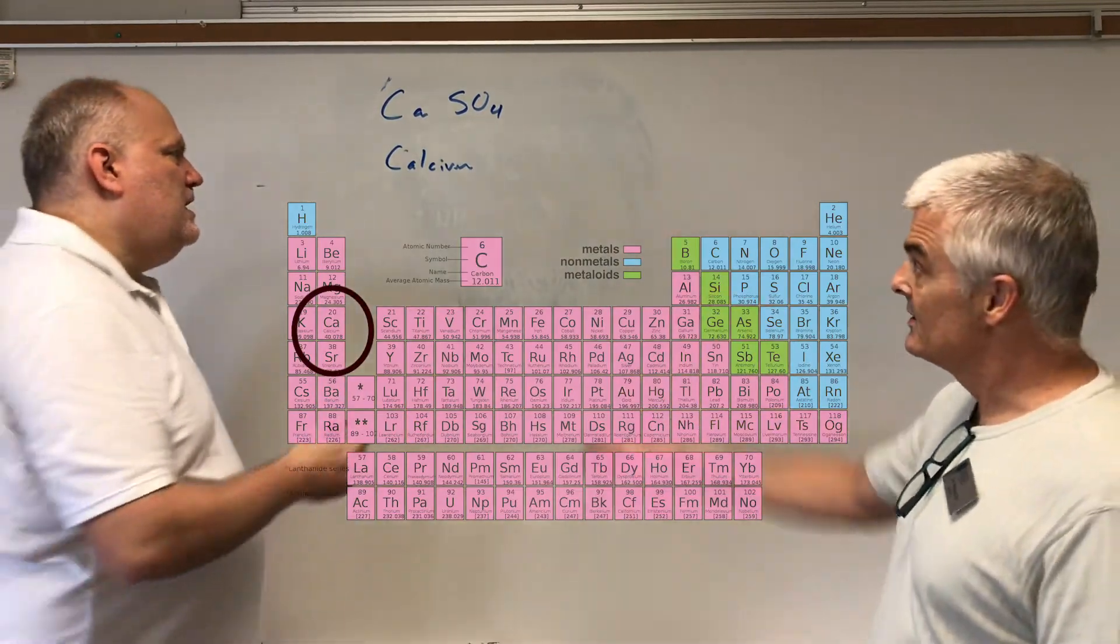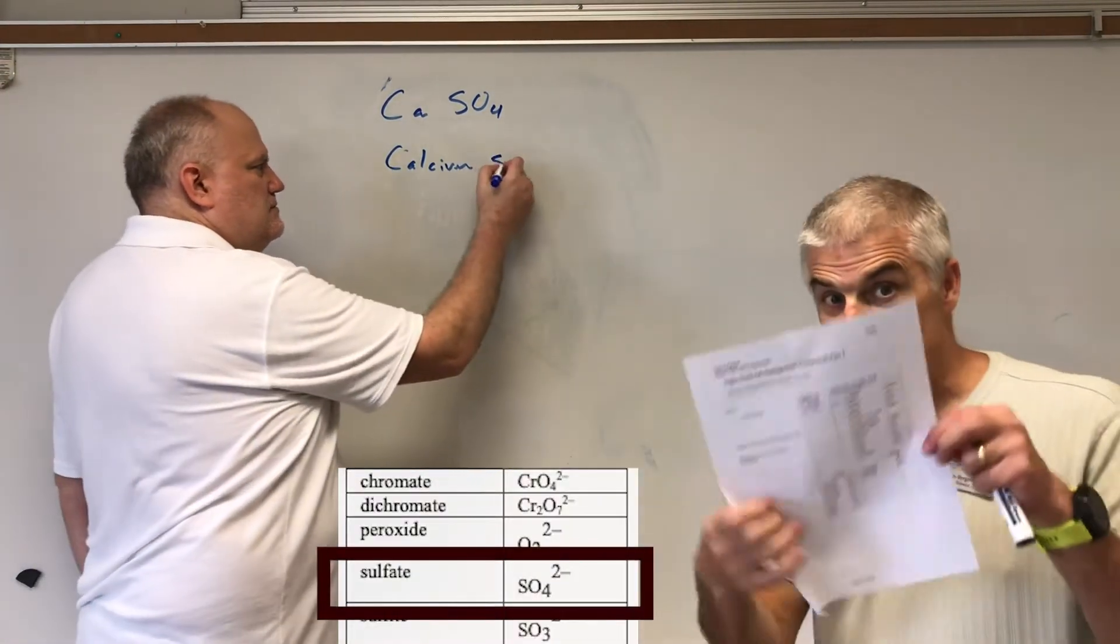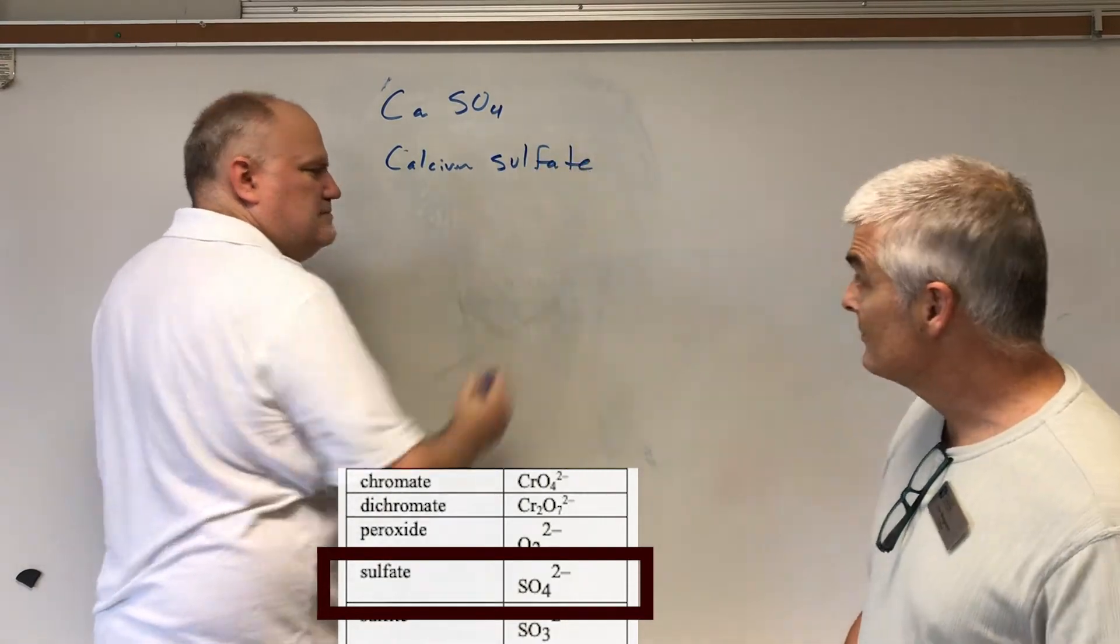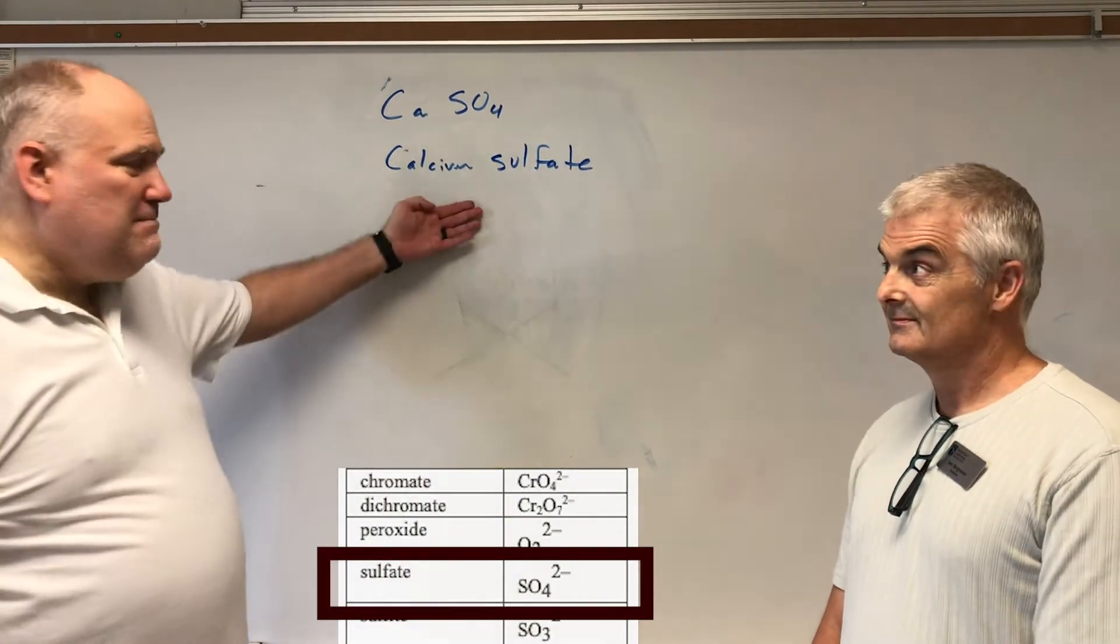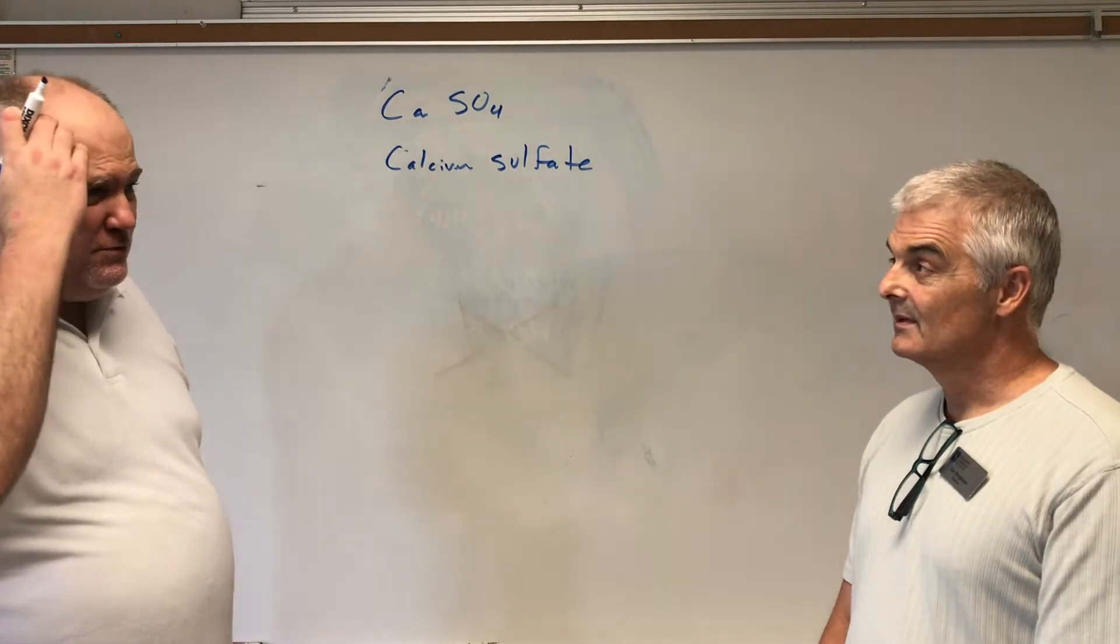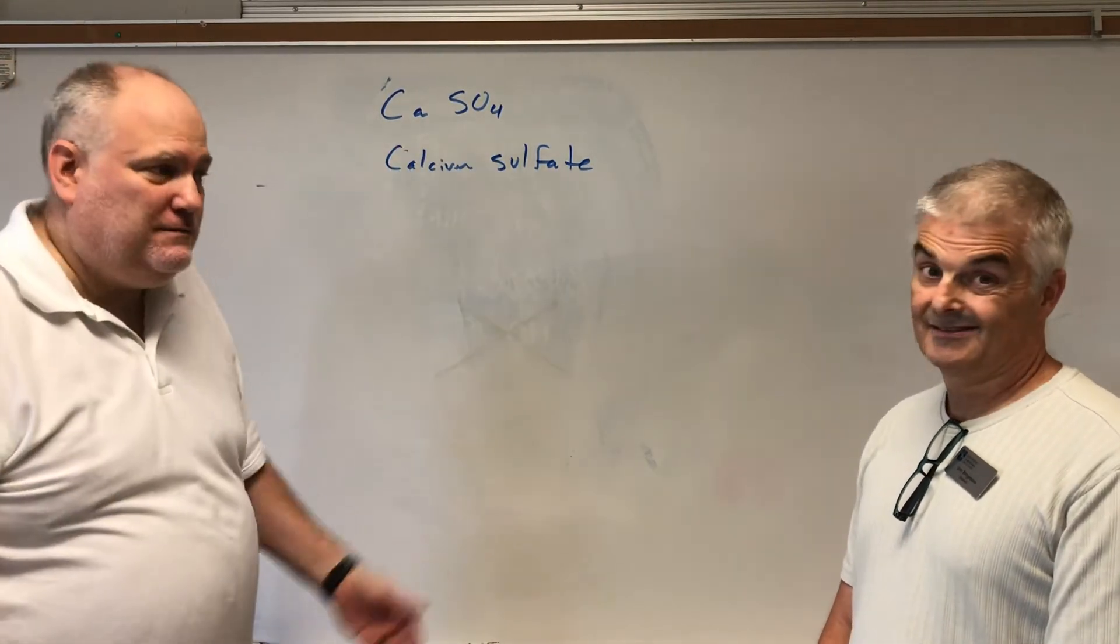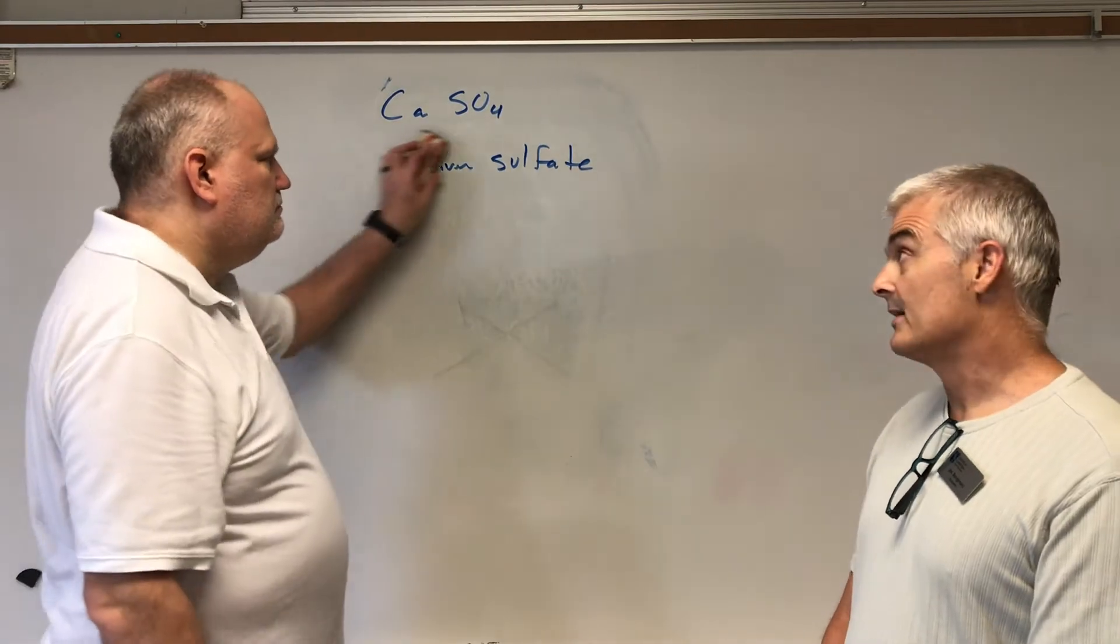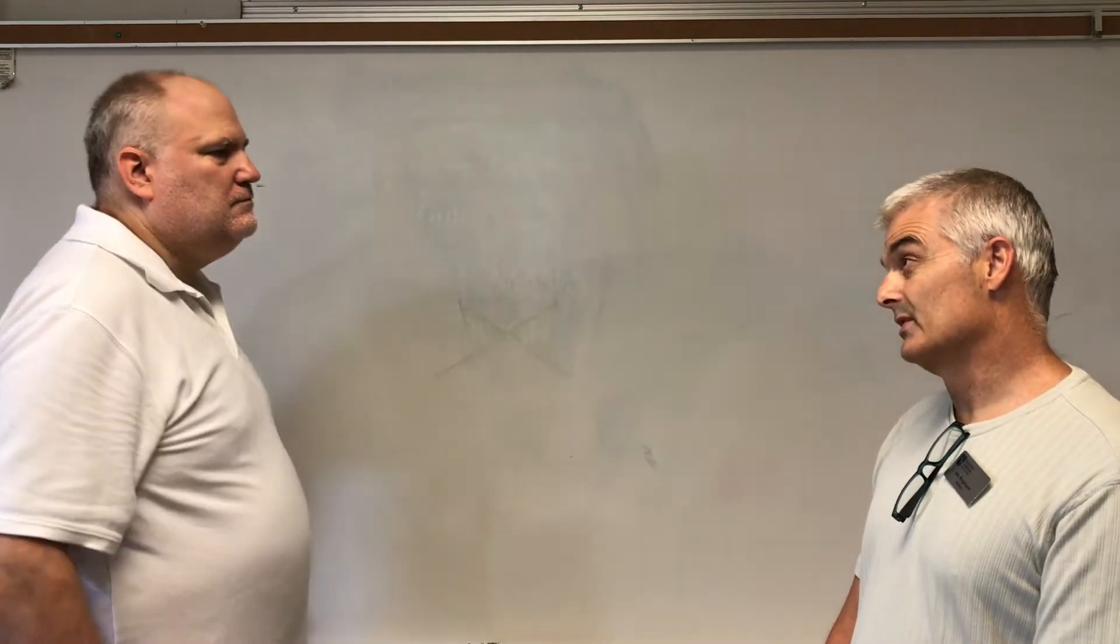And SO4, got my trusty table right here. I'm going to say this: naming is actually really easy. The only thing you have to worry about ever is if you have the Roman numerals, because if you know the names of these, you can just write them down. That's it folks. I think we need to do one with Roman numerals because those can be a little trickier.